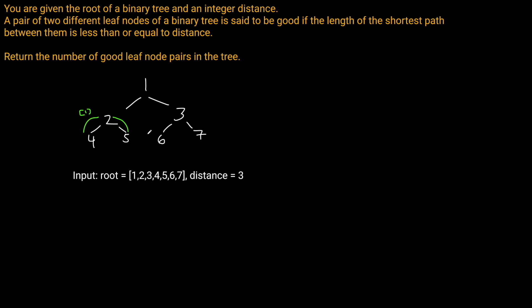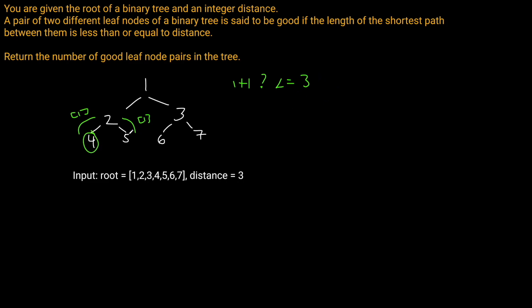Let's work through this. We traverse the tree and go to the leaves. When we reach a leaf, we return 1 to the parent as a list, representing the distance to all leaves from this subtree. Node 2 receives a list containing 1 from its left subtree and a list containing 1 from its right subtree. For every combination of values in these lists, if the sum is less than or equal to our distance of 3, we have a good leaf pair. Here, 1 plus 1 equals 2, which is less than 3 — so we've found a good leaf pair and increment our count.